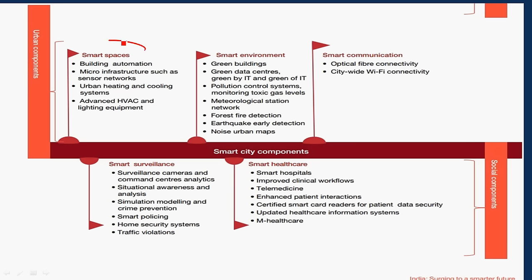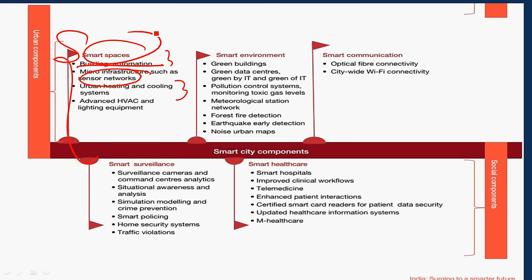In the area of smart spaces, we have building automation, microinfrastructure such as sensor networks, urban heating and cooling systems, and advanced high-voltage alternating current and lighting equipment. These are the smart spaces which provide comfort to the citizens to live.